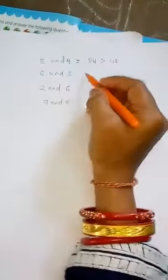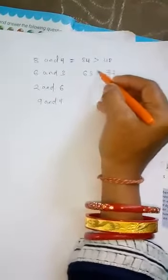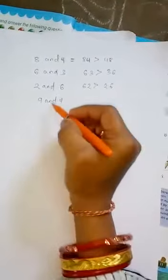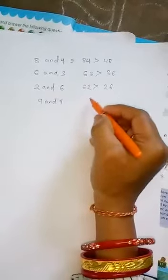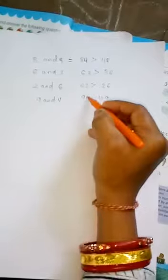6 and 3. We make 63 and 36. 26, 52, 26. What do we do with these numbers? 94 and 49. What do we do with these numbers? Look at your book.